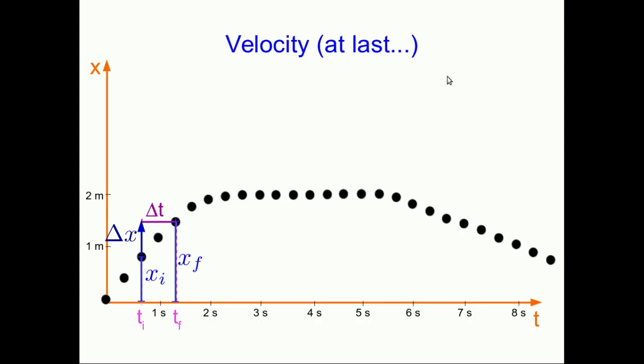So that sets us up for next lecture, where one of the main messages is going to be that the slope of the x-component of position graph versus time is the x-component of the velocity.